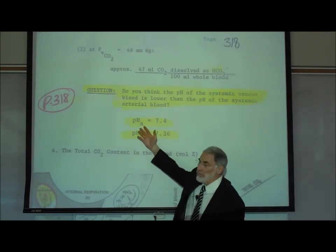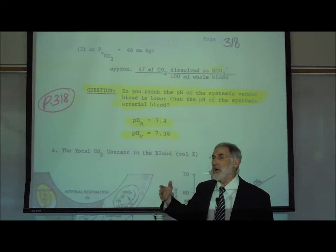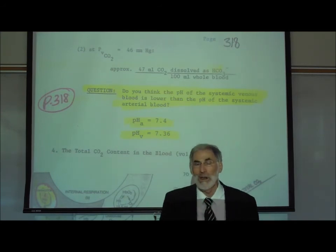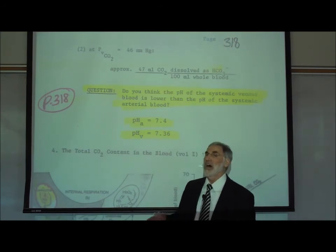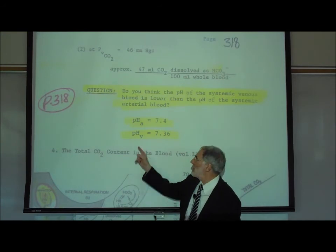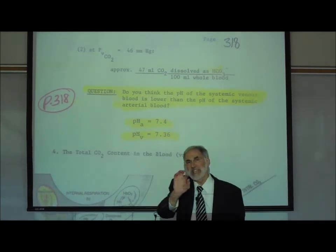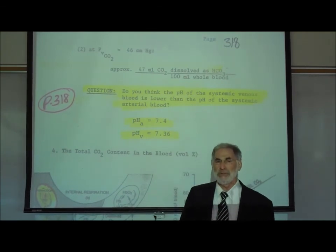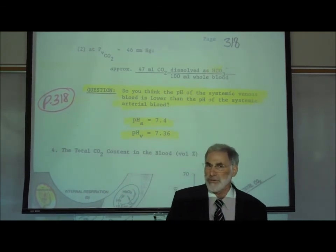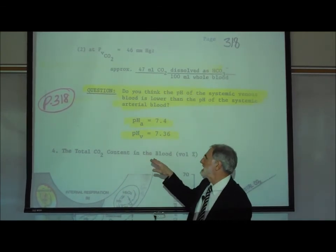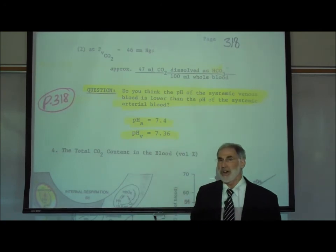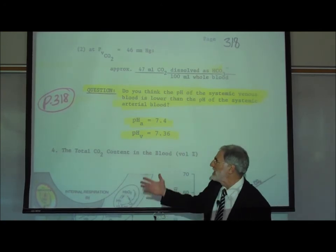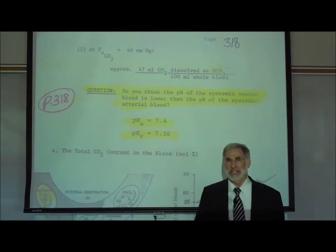The normal pH of our systemic arterial blood is about 7.4, but the normal pH of systemic venous blood is a lower pH — 7.36 — meaning it is more acidic. That's because of the increased amounts of carbonic acid found in the systemic venous blood.